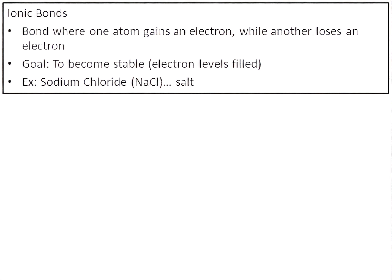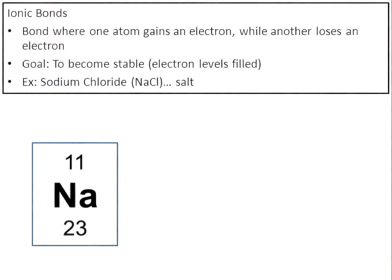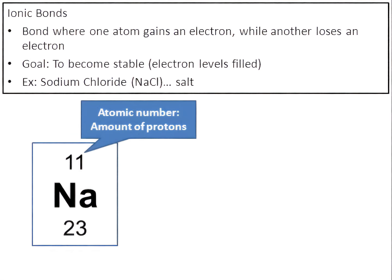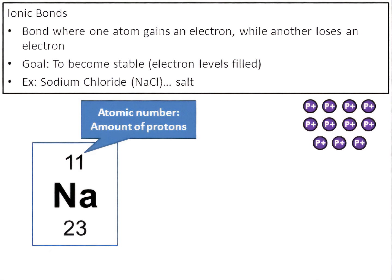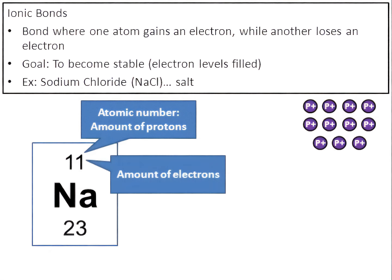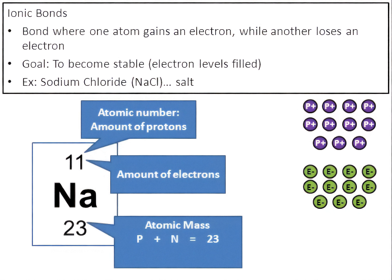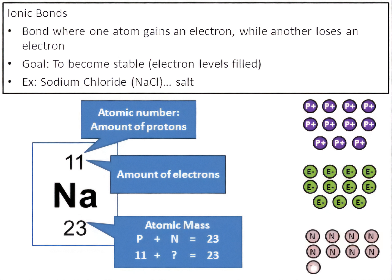A classic example is sodium chloride — Na is sodium, Cl is chlorine. Put the two together and you have what's also called salt. From the periodic table, sodium's atomic number is 11, so it has 11 protons. Since protons and electrons are usually found in the same amount, sodium also has 11 electrons. The mass number is 23, so 11 protons plus 12 neutrons equals 23 — sodium has 12 neutrons.